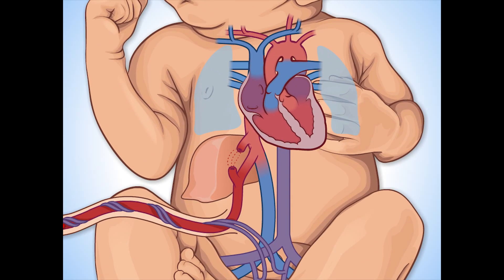The umbilical vein divides before reaching the liver. One branch, called the ductus venosus, shunts oxygen-rich blood directly into the vena cava. This oxygen-rich blood enters the right atrium, then the left atrium, through the foramen ovale.